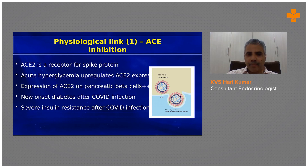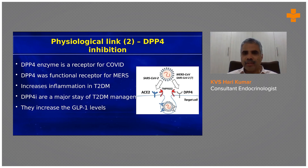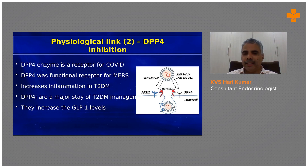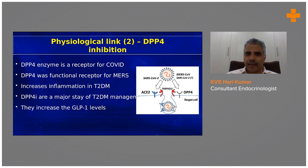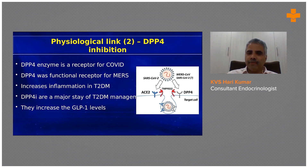The second receptor relevant to viral binding is DPP4. During the Middle East Respiratory Syndrome (MERS) epidemic, DPP4 was first described as a functional receptor for the MERS virus, and the COVID virus also uses DPP4 as a receptor. DPP4 inhibitors are a major class of type 2 diabetes medications that work by increasing native GLP-1 (glucagon-like peptide-1) levels, helping manage diabetes while also being relevant to viral entry.